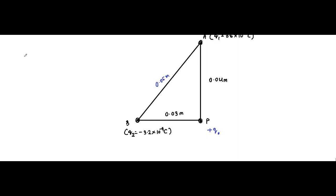The electric field equals F vector divided by q0, the unit positive test charge. This q0 will always cancel out from the electric field equation — the test charge will always be missing because in Coulomb's law expression it appears in the numerator and then in the denominator, so they cancel out.